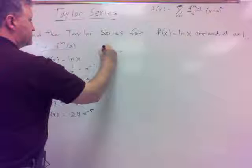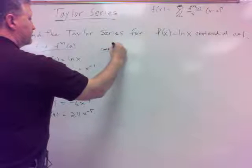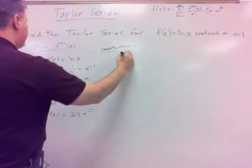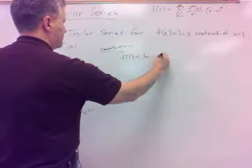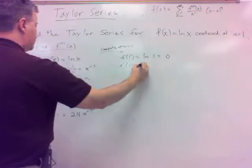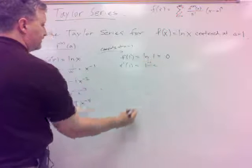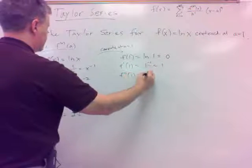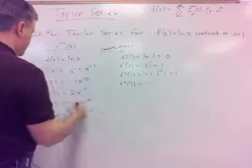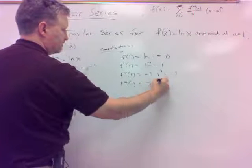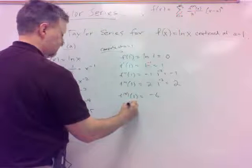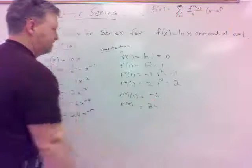Now compute these at a equals 1, because that's where we want to center. f of 1 would be ln of 1, which is 0. f prime at 1: x to the minus 1 evaluated at 1, which is 1. Second derivative at 1: negative 1 times 1 to the negative 2, which is negative 1. Third derivative: 2 times 1 to the negative 3, which is 2. Fourth derivative: negative 6. Fifth derivative: 24, since 1 to the negative 5 is 1.